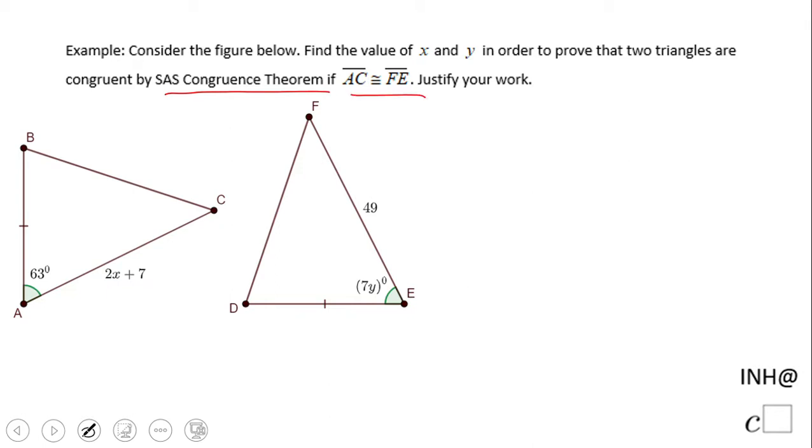SAS means side angle side. What do you notice? These two sides are congruent, and we have AC congruent to FE, and these two angles are congruent. So side angle side is the theorem that can be used to prove that these two triangles are congruent.